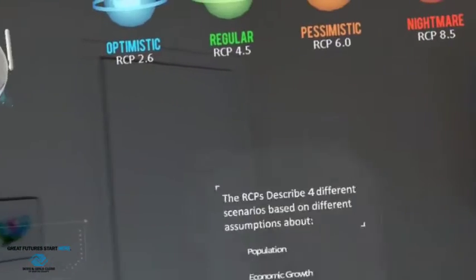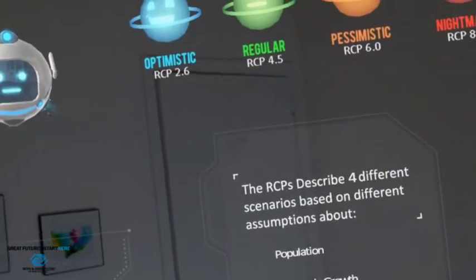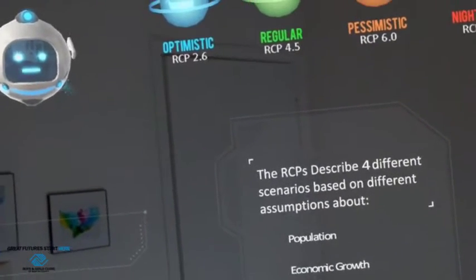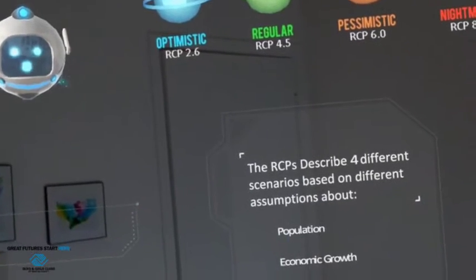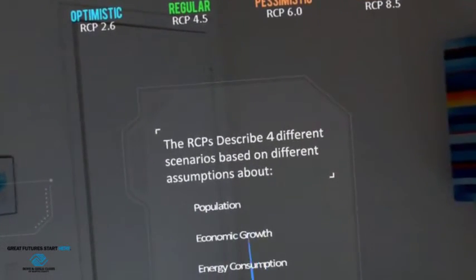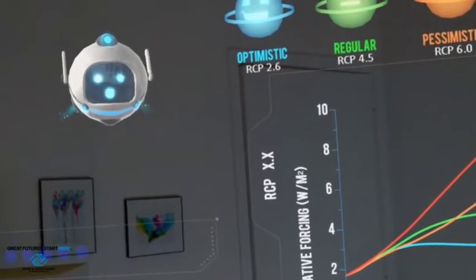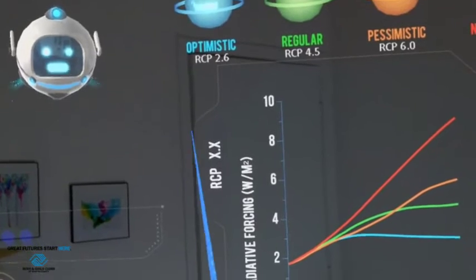Scientists use data to predict future climate scenarios based on the level of greenhouse gases in the atmosphere. These levels depend on assumptions about the world population, economic growth, energy consumption, and land use. Scientists call these predictive scenarios representative concentration pathways, or RCPs.